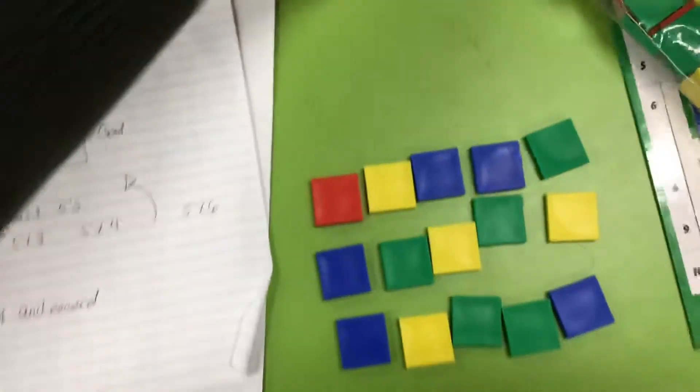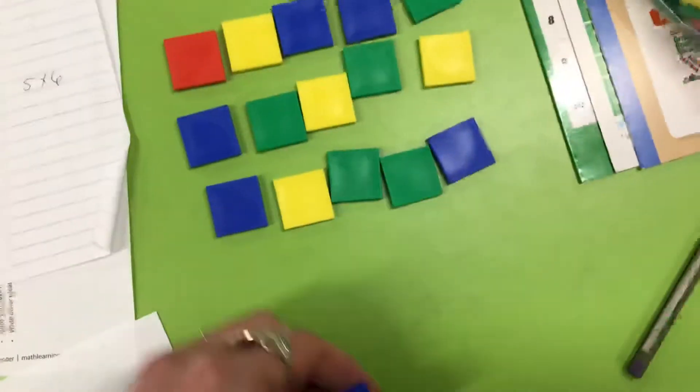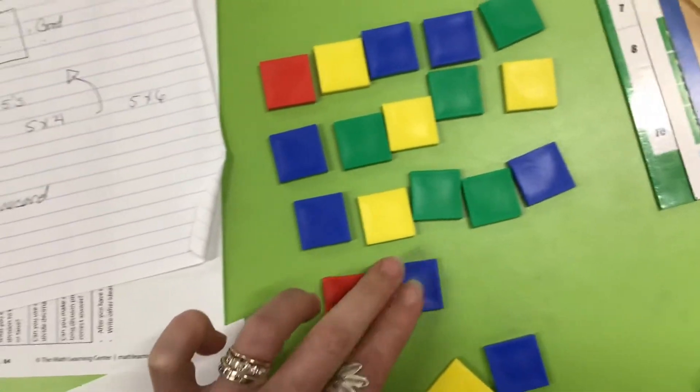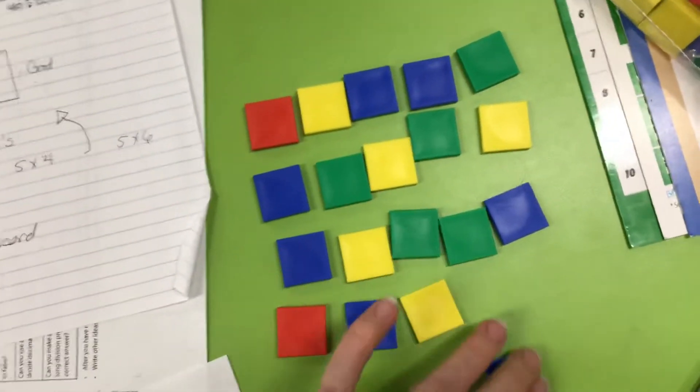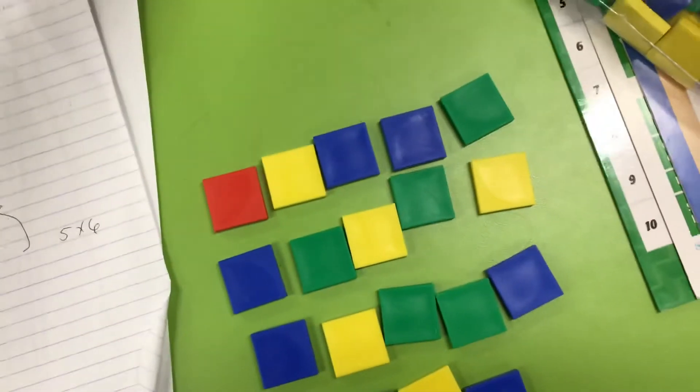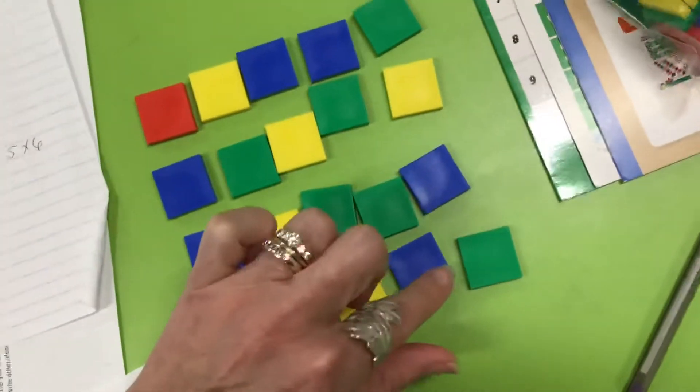So I am building an array of 5 by 5. By the way, all of these arrays should be even. You shouldn't have anything hanging off the side right now.